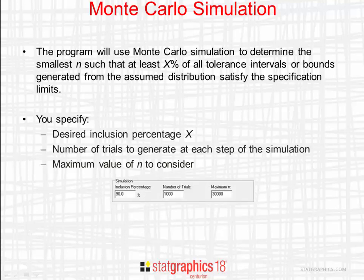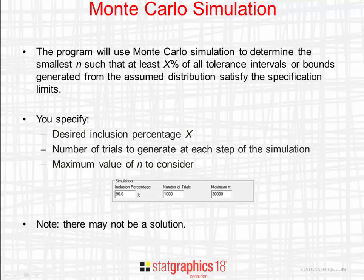At the bottom of the data input dialog box, you specify the desired inclusion percentage, the number of trials to generate at each step of the simulation, and the maximum value of n to consider. The program will start with a small value of n and increment it one unit at a time until the desired percentage of all simulated tolerance intervals are within the spec. It should be noted that depending upon the parameters of the distribution and the specification limits, there may not be a solution to the problem.